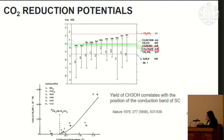This field started in the 1980s. The first paper was by Kenji Honda in 1979 in Nature, showing that wide-bandgap semiconductors and UV light can reduce CO2 to produce methanol or methane. The yield increases as the overpotential increases. Tungsten trioxide gives some amount, but silicon carbide gave the highest yield.